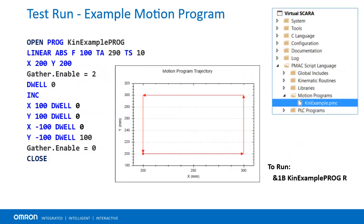At this point, we can run an entire motion program. Add an example program like the one shown on screen to your project and download. Set up your plot and run with ampersand 1 v program name r.